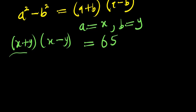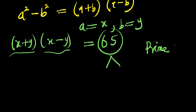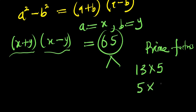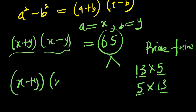Since we have a product equal to 65, we need two factors that multiply to give 65, and they must be prime numbers. The two prime factors of 65 are 13 and 5 — both are prime. So we have (x + y)(x − y) equals 5 times 13.